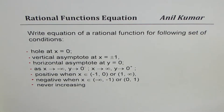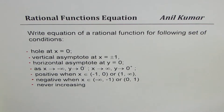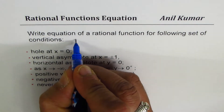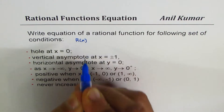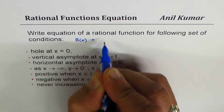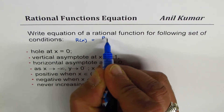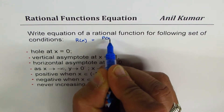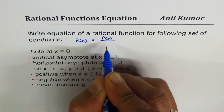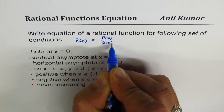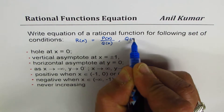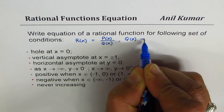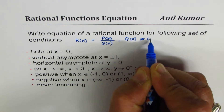A rational function is of the form p(x) divided by q(x) — a polynomial divided by another polynomial — where q(x) is not equal to 0.